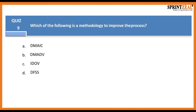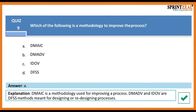Question nine: Which of the following is a methodology to improve the process? Is it DMAIC, DMADIV, IDOV, or DFSS? The answer is A. DMAIC is a methodology used for improving a process, while DMADIV, IDOV, and DFSS methods are meant for designing or redesigning processes.